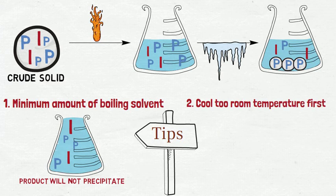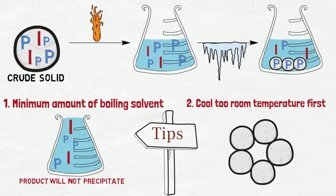Secondly, we need to make sure to let the flask achieve room temperature before putting it on ice. If we directly put the flask on ice, the solution will crystallize rapidly and the impurities will be trapped between the pure growing crystals, precipitating with the product.